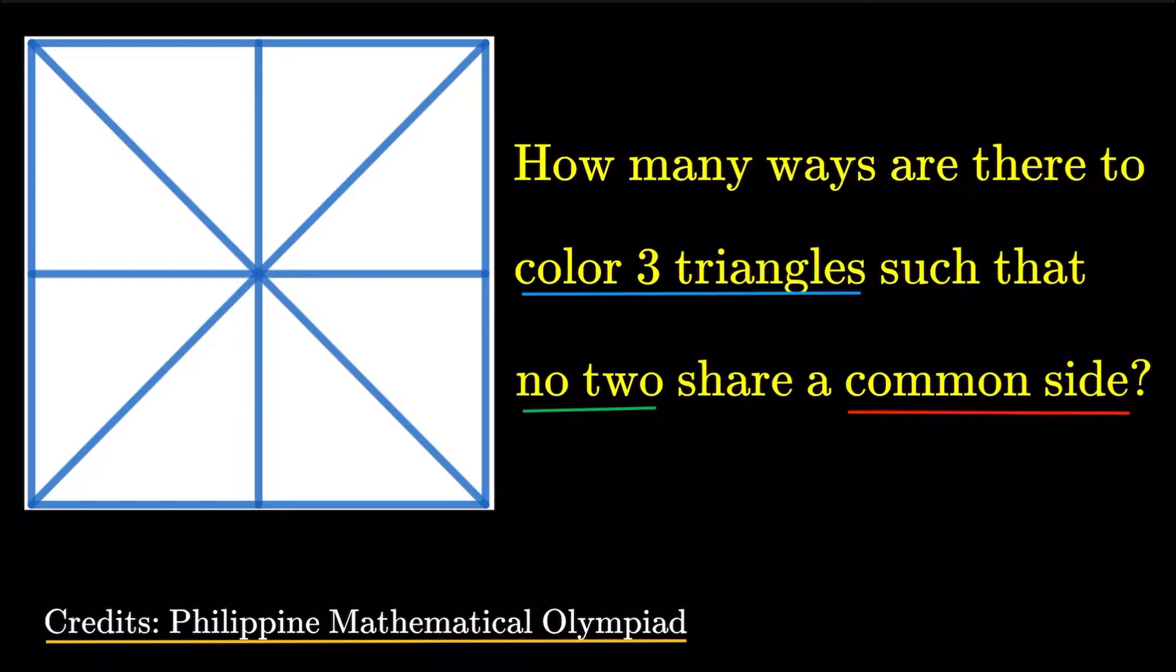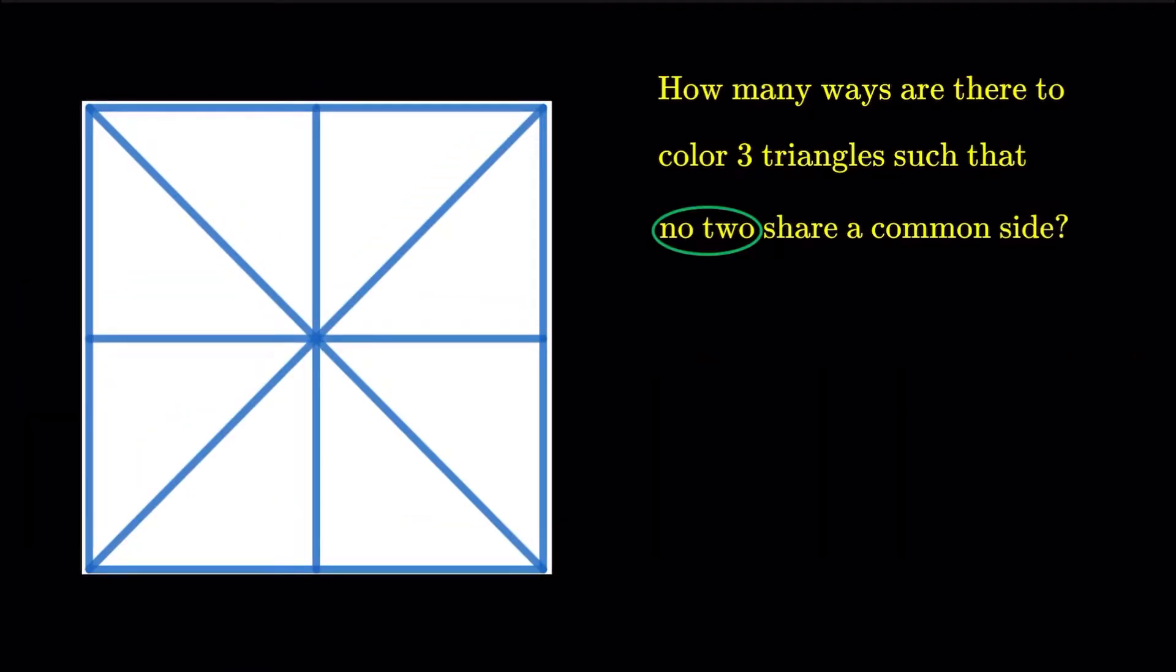Now, take a look at the word no two. We've done this a lot of times on the channel. We're probably going to negate the no, make it a yes for now. We're going to do complementary counting. So what we're going to do here is let's just say we know the total number of ways to color. That's just simply 8 choose 3 because there are eight right triangles, I'm choosing three. And what I'm going to do is I'm going to negate the no.